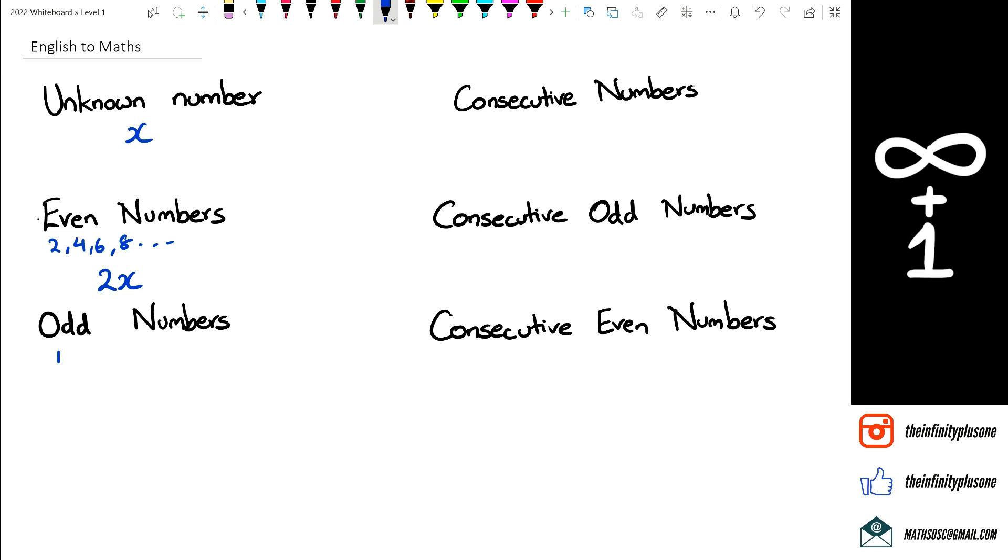Now as for the odd numbers, we've got 1, 3, 5, 7, and so on. We write odd numbers as 2x plus 1. Sometimes people write this also as 2n plus 1.